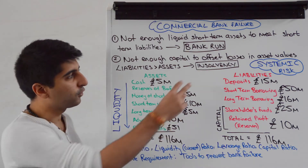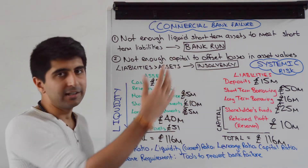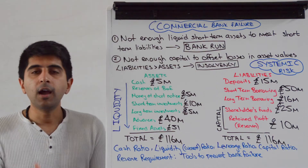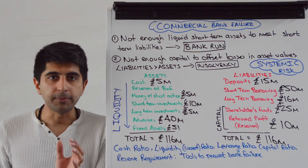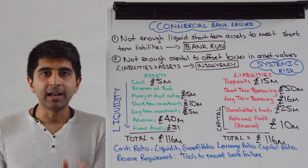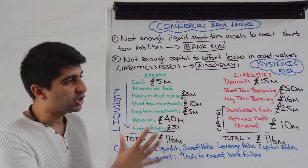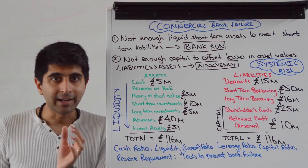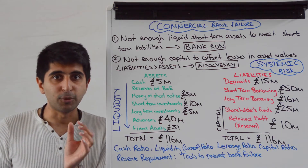Both types — insolvency and a liquidity crisis or a bank run — are the two types of bank failure. Let's look at the balance sheet from the previous video and understand these two in more detail.